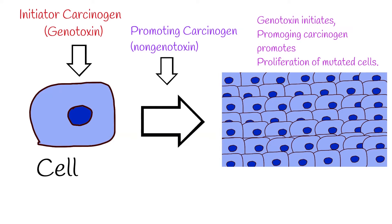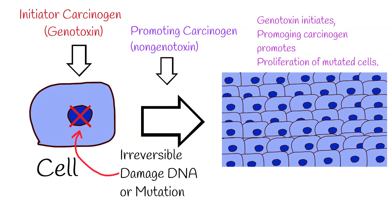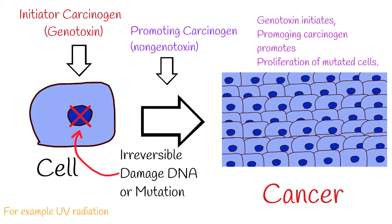Carcinogens can directly cause irreversible damage of DNA or mutations by binding to DNA. Such carcinogens are called genotoxins — for example, chemical agents like nitroso-N-methylurea, ultraviolet light, and ionizing radiation are genotoxins. Non-genotoxins do not directly affect DNA but act in other ways to promote growth; these include hormones and some organic compounds.